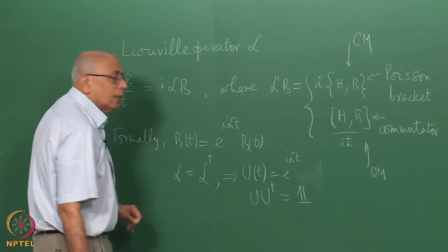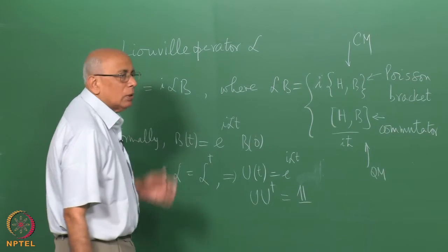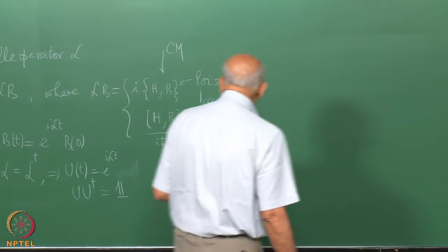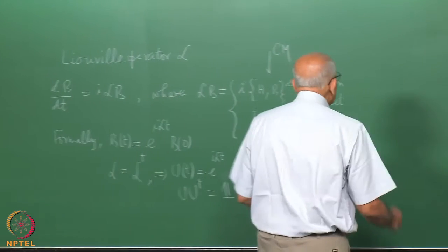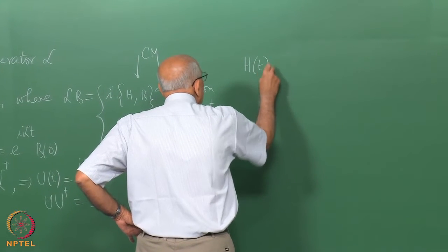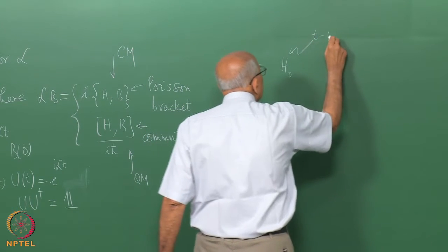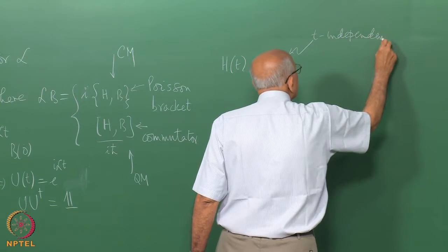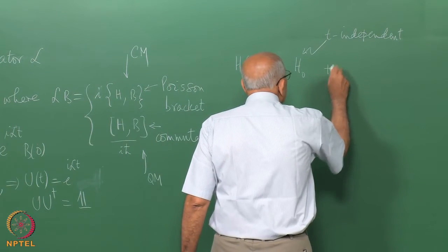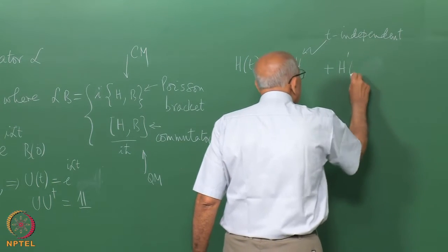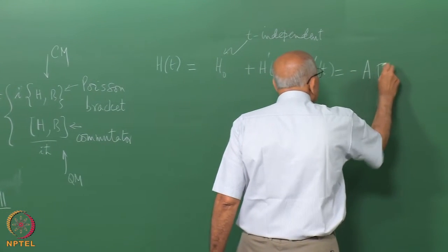Now we would like to extend this to a case where L becomes explicitly time dependent. This is fine as long as the Hamiltonian is autonomous and does not have a time dependence, but the moment you have an explicit time dependence in H, matters become more complicated. In particular, we are interested in a situation where the Hamiltonian H(t) equals H-naught — the time-independent unperturbed Hamiltonian — plus a perturbation H-prime which is a function of t.